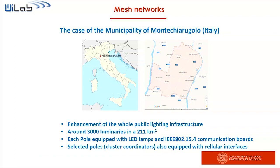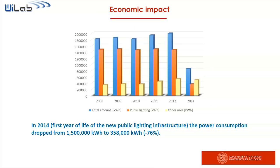This is a second example — an implementation in Italy, Monte Chiarugolo, where the whole public light infrastructure has been enhanced. This is an example of the economic impact of this technology. In the first year of life of the new infrastructure, power consumption dropped from approximately one million and a half to less than 400,000, with a saving of 76%. So the cost of the infrastructure is effectively paid in a few years by the energy savings.